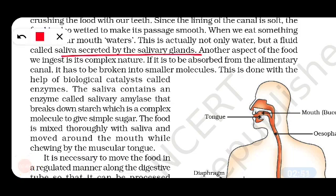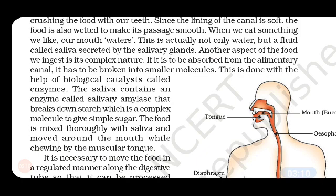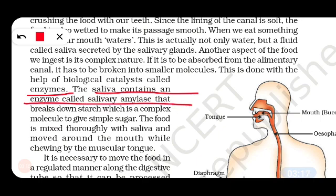Another aspect of the food we ingest is its complex nature. If it is to be absorbed from the alimentary canal, it will need to be broken into very small molecules. This is done with the help of a biological catalyst called an enzyme. Saliva contains an enzyme called salivary amylase that breaks down starch, which is a complex molecule, to give simple sugar.